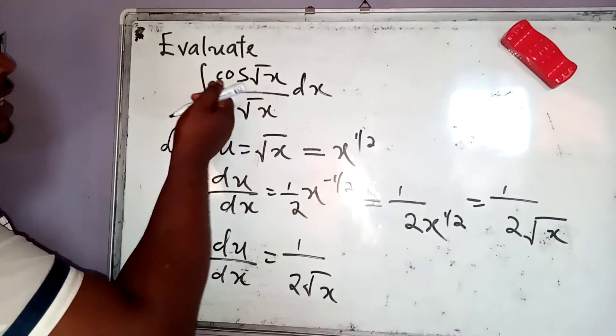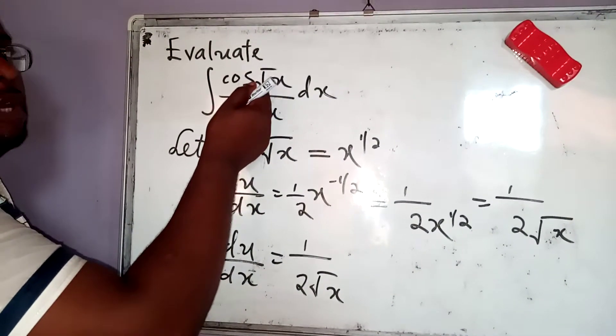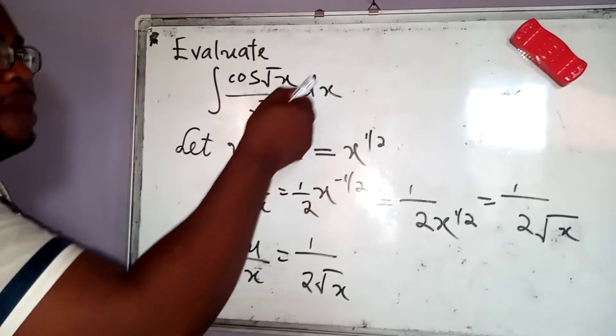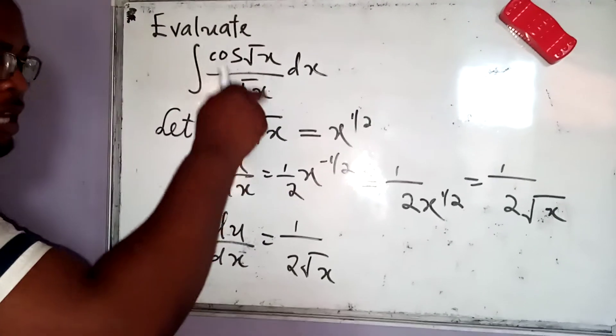Now looking at my integral, I can easily evaluate cosine of anything. But this factor here makes it awkward. So I want to remove the x over root of x.